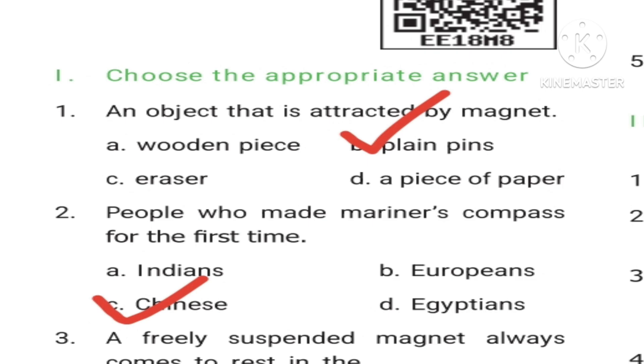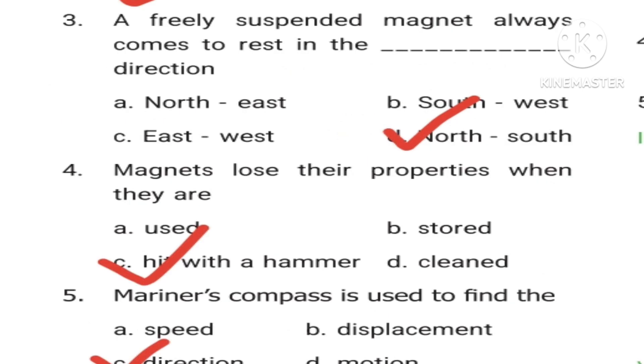Third question: A freely suspended magnet always comes to rest in the dash direction - Option A: northeast, B: southwest, C: east-west, D: north-south. Answer is D, north-south. Fourth question: Magnets lose their properties when they are - Option A: used, B: stored, C: hit with a hammer, D: cleaned. Answer is C, hit with a hammer.